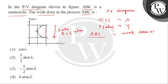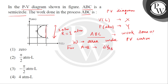When we talk about work done, it is obtained by the area under the pressure-volume curve with the volume axis. For the process A to B, the volume is reduced, so the change in volume is negative. Therefore, the work done from A to B is also negative, because work done equals pressure multiplied by change in volume.